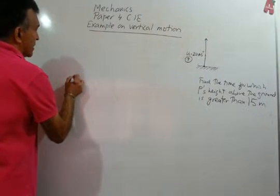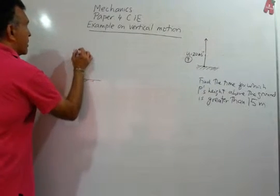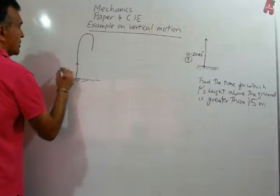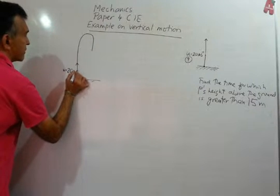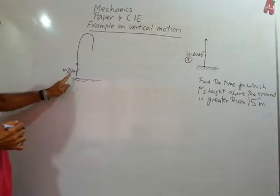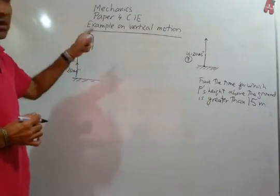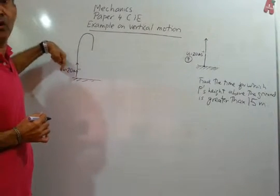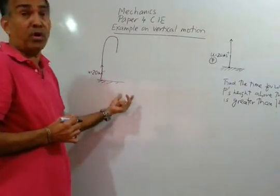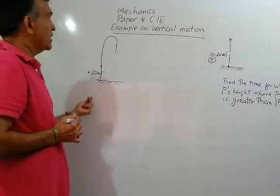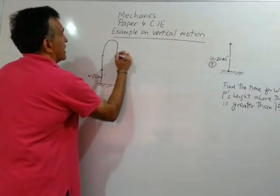Let me draw the picture again. We have ground level and the motion of this particle — we let it fly with an initial speed of 20 meters per second. It's going to go up and come down. In vertical motion it goes up and comes down along the same straight line, but on the board we draw it like this so people get an idea.